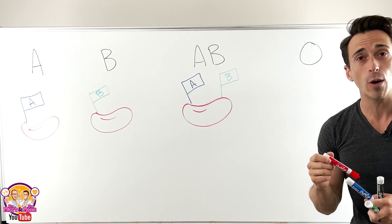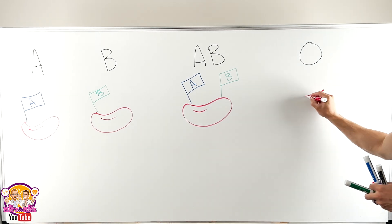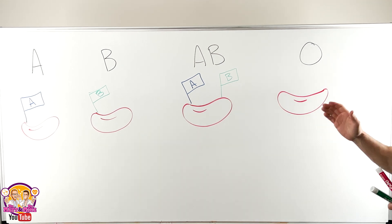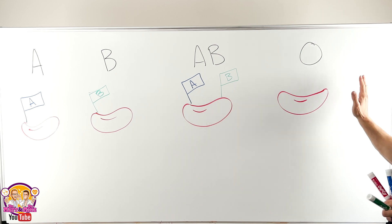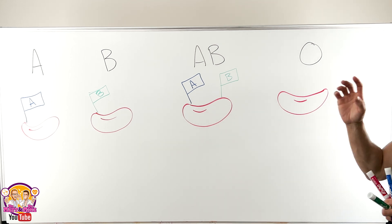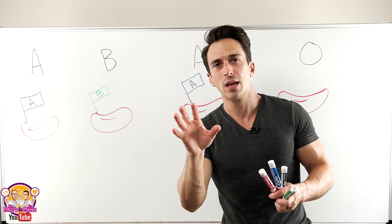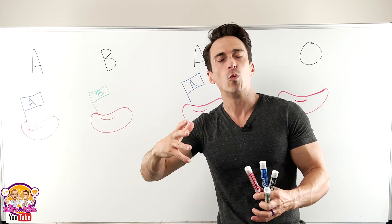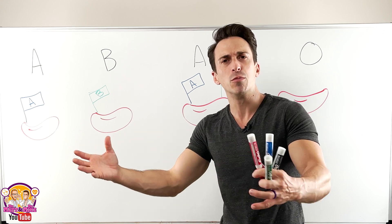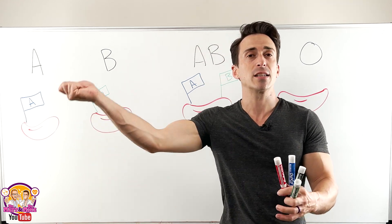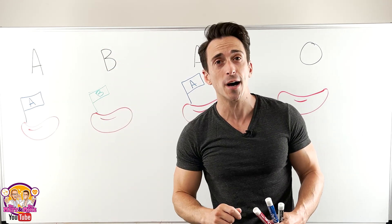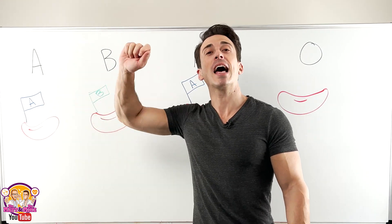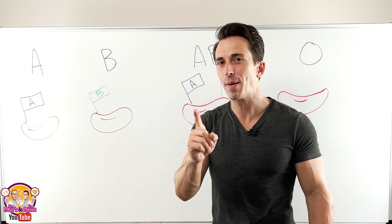Finally, when we look at blood type O, there are no flags. So blood type O has no flags. I like to think about it in terms of different types of villages — think back to medieval times, when you've got a castle and a community and a town, and that town has a flag that represents who they are. So type A has the A flag.